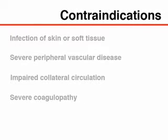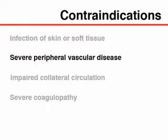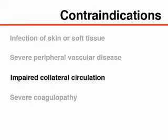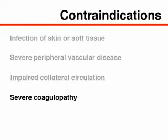There are no contraindications to the use of ultrasound guidance. However, radial arterial catheterization is contraindicated in patients with infection of the skin or soft tissue at the insertion site, severe peripheral vascular disease, impaired collateral circulation, or severe coagulopathy.